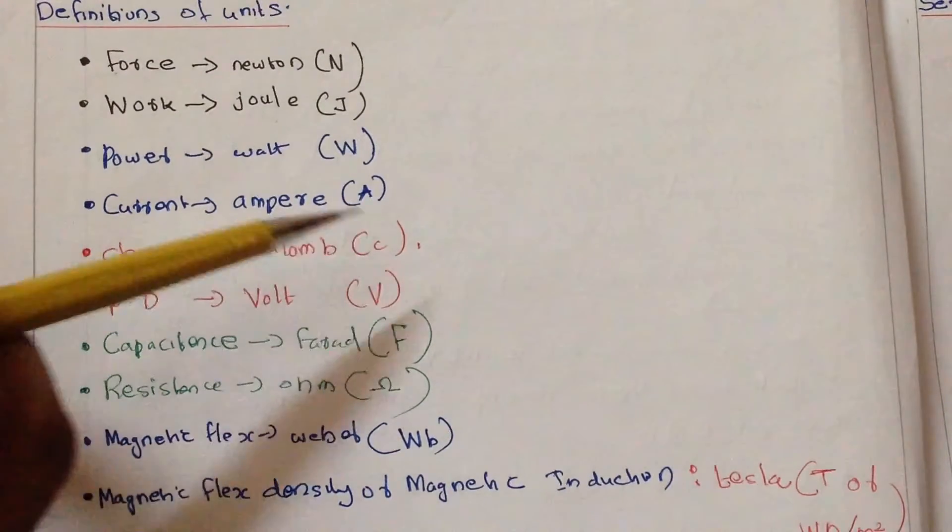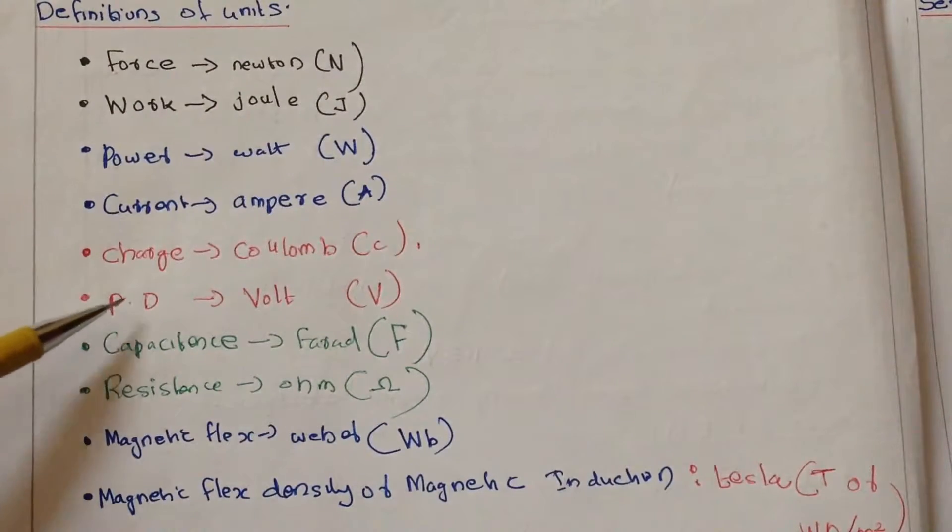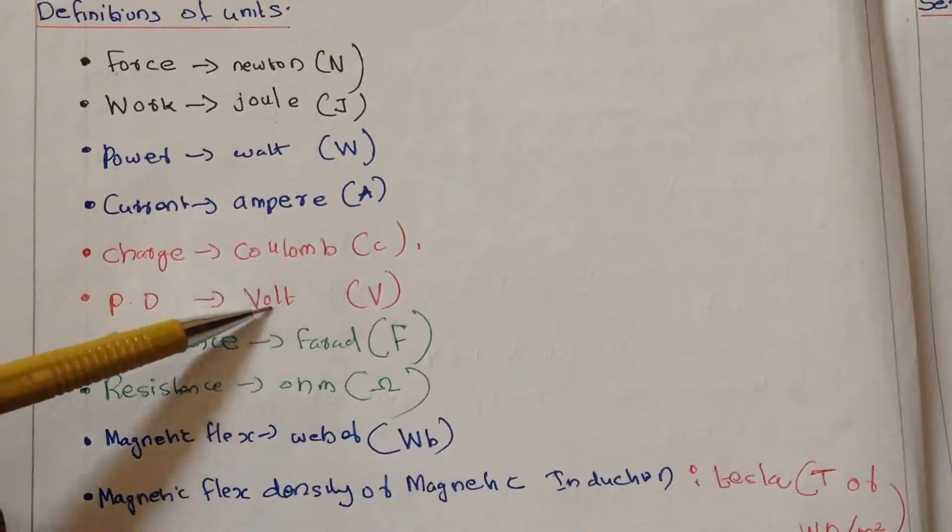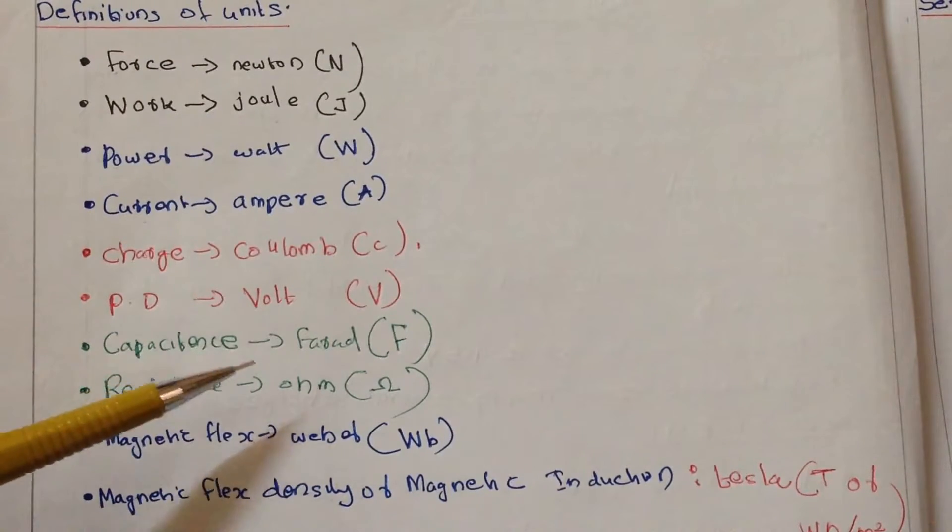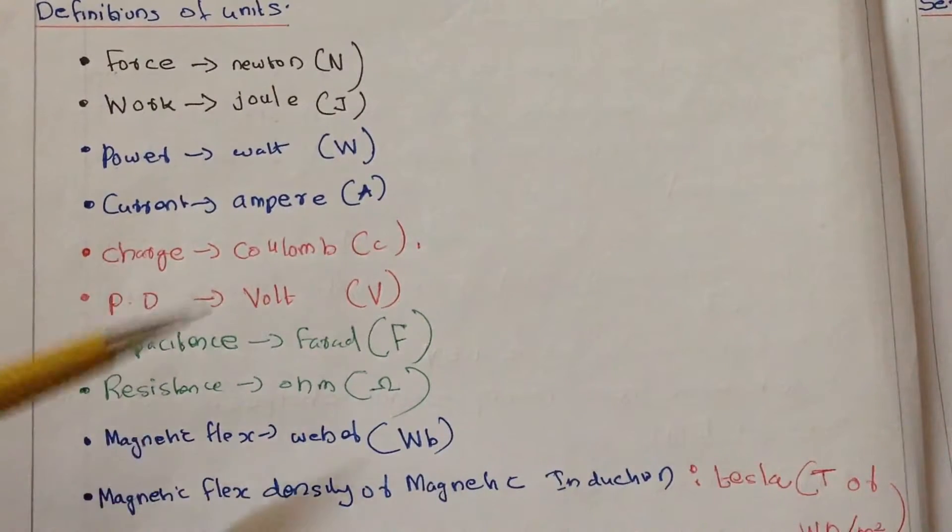PD (potential difference) is measured in Volts (V), as well as EMF. Capacitance is measured in Farads (F), resistance in Ohms, and magnetic flux in Weber (Wb).